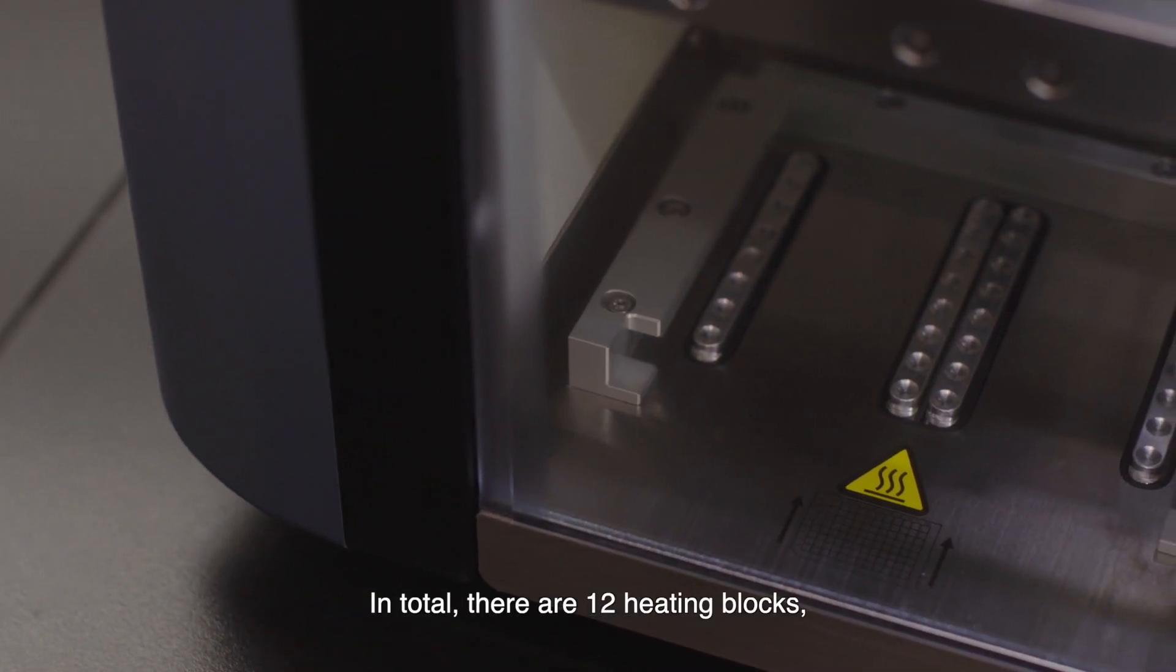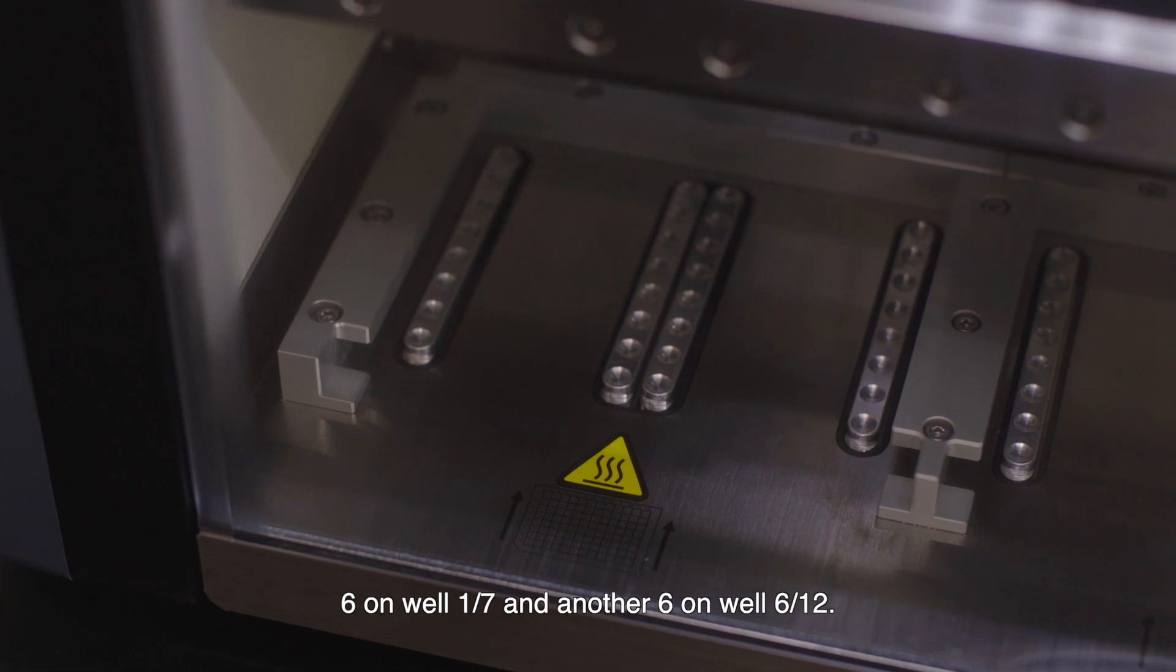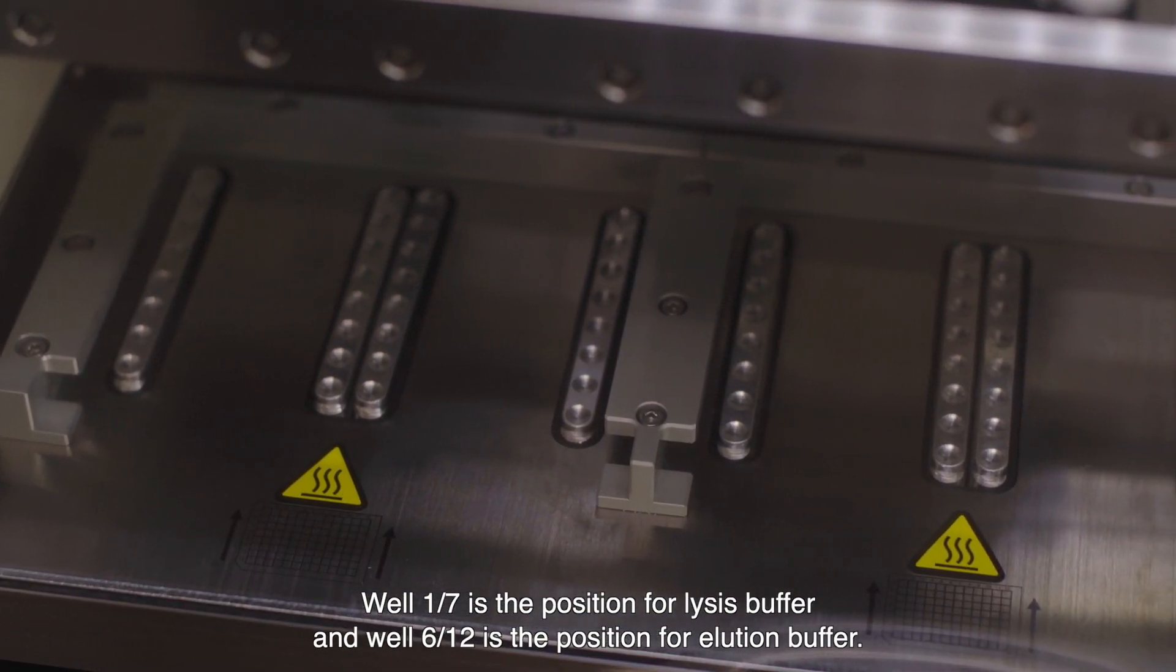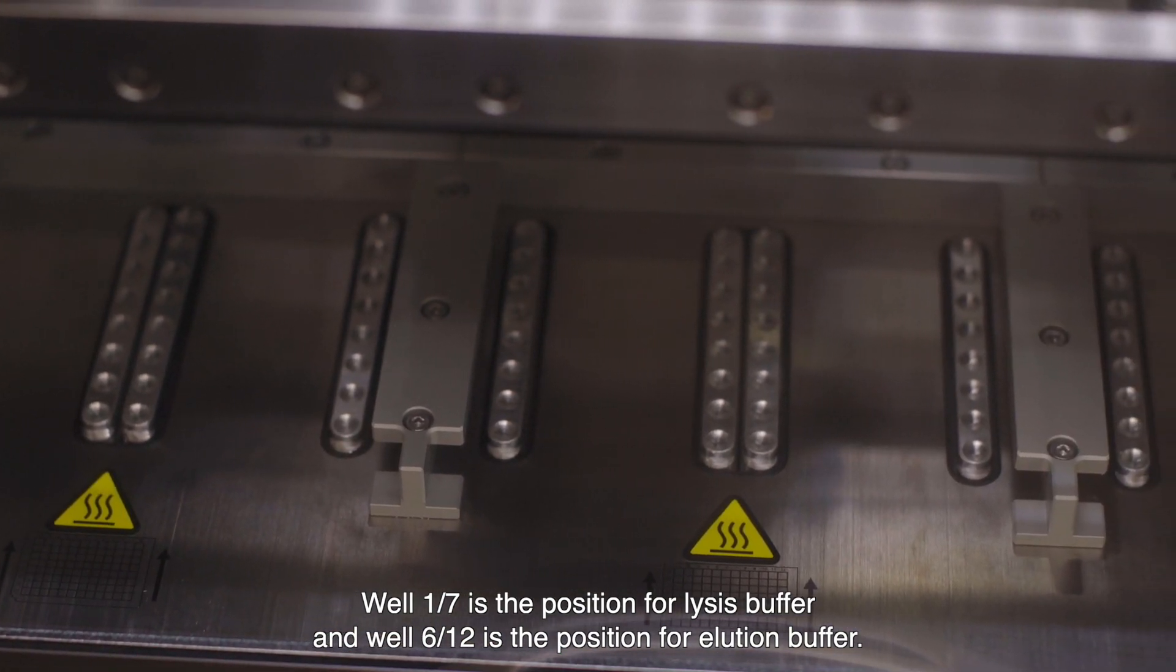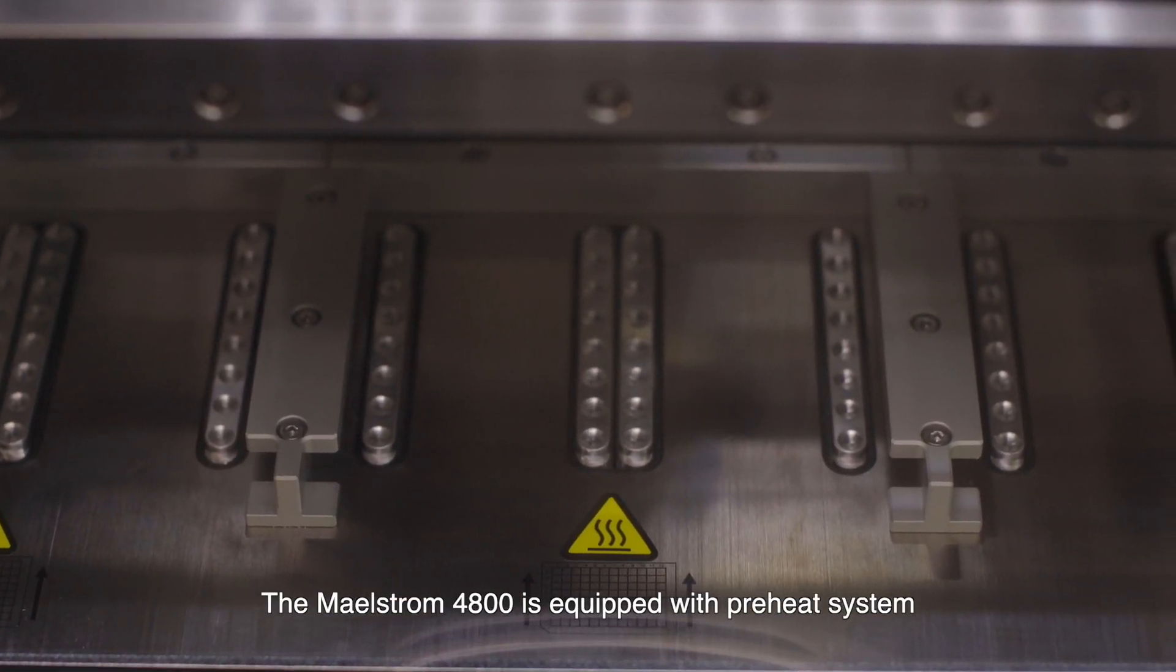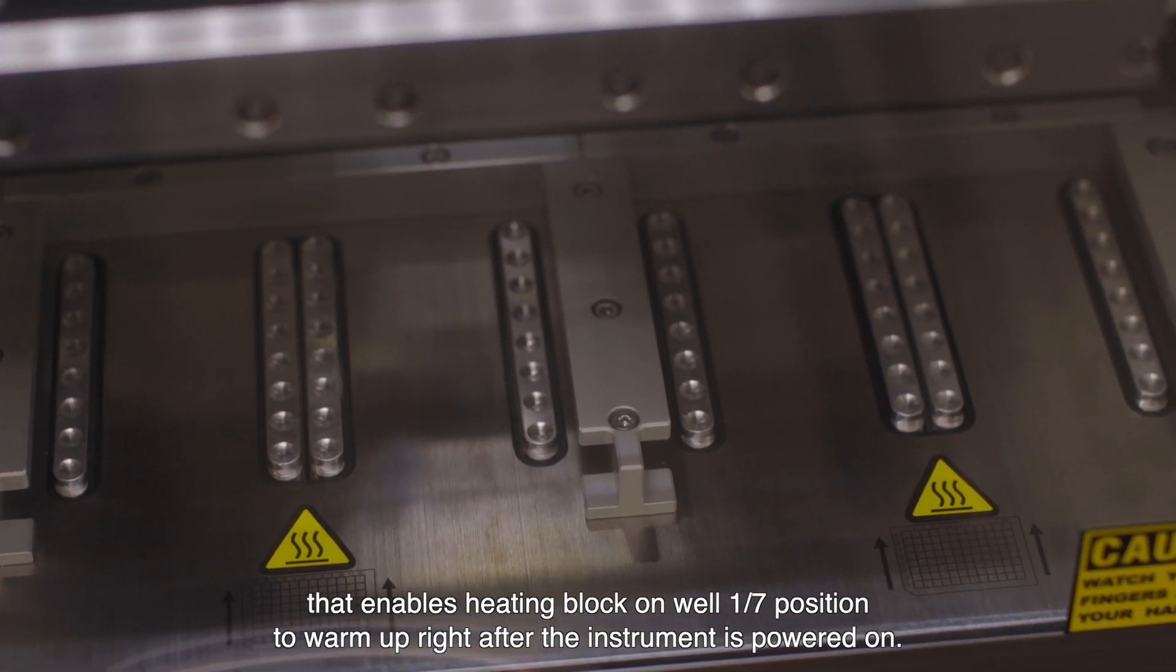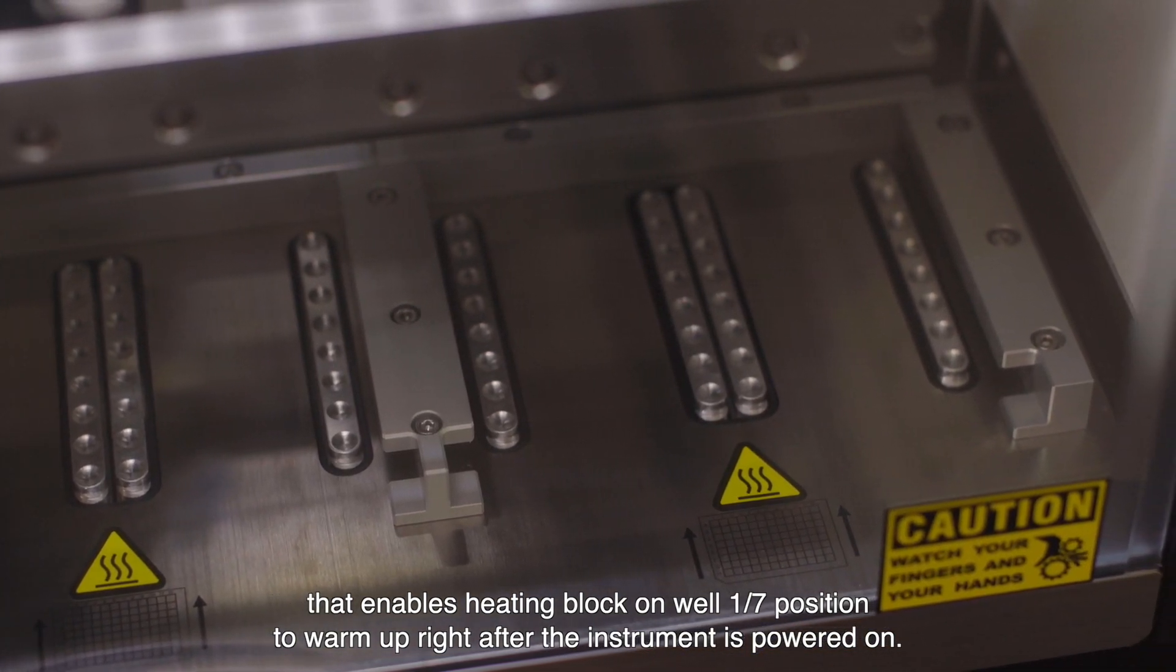In total there are 12 heating blocks. Six on well 1 and 7 and another six on well 6 and 12. Well 1 and 7 is the position for lysis buffer and well 6 and 12 is the position for elution buffer. The Maelstrom 4800 is equipped with a preheat system that enables heating blocks on well 1 and 7 position to warm up right after the instrument is powered on.